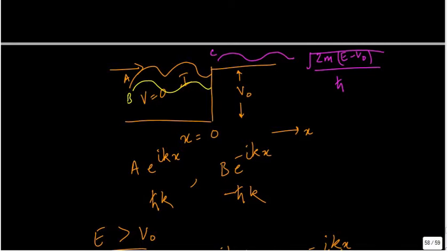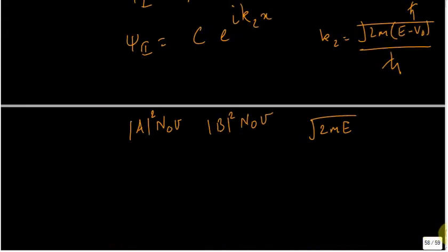If I consider waves of the same energy, if I consider a wave of energy E incident, then this is the wave that transmits is root 2m(E - V₀). The frequency is of course related to that only. So now I have this: in region 1, k₁ is equal to this. So I divide this by m.